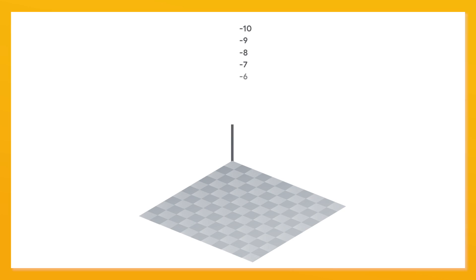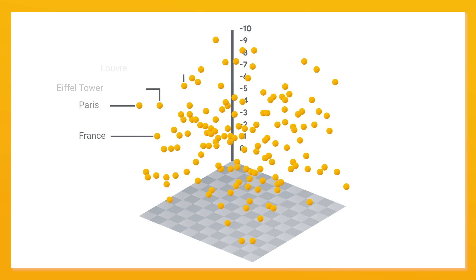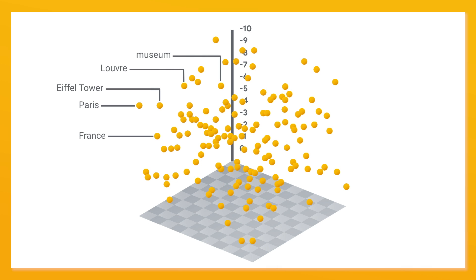What makes Weaviate special among knowledge graphs? I would argue there are three things. The first thing is that we don't store data objects in a traditional way — not in a table or in a traditional graph. We store it in a space, and this is a semantic space. So every time you add a new data object, we try to determine what does this data object mean, what does it represent in the real world, and we place it in that space.